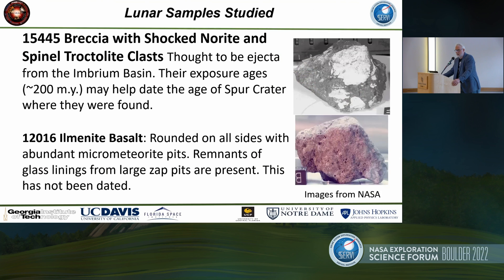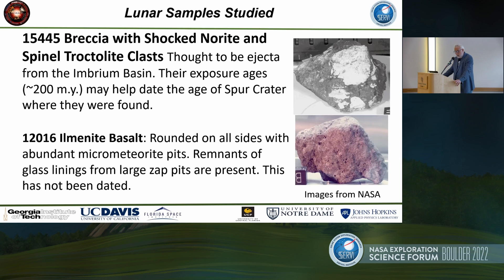We were very specific about looking at samples that have been abused — meaning they've been kicked around a bit and space weathered. The two samples I'm going to show data on are the 145445 Brescia, which has a shock norite and a spinel troctolite clast, thought to be an ejecta from the Imbrium basin that landed in the Spur crater, about 200 million years old. The other sample is an ilmenite basalt, rounded on all sides with many micrometeorite pits, bombarded by micrometeorites and subjected to space weathering.